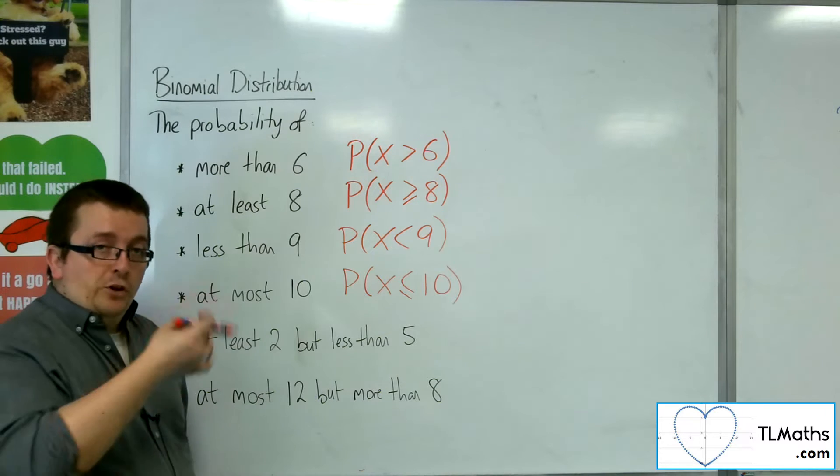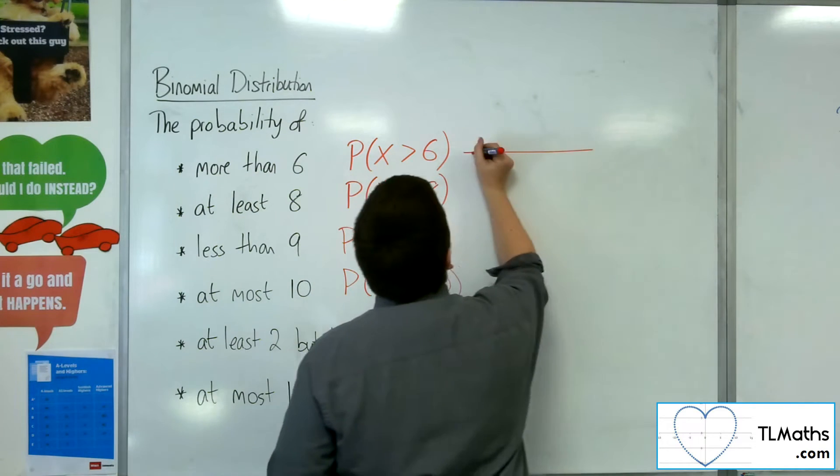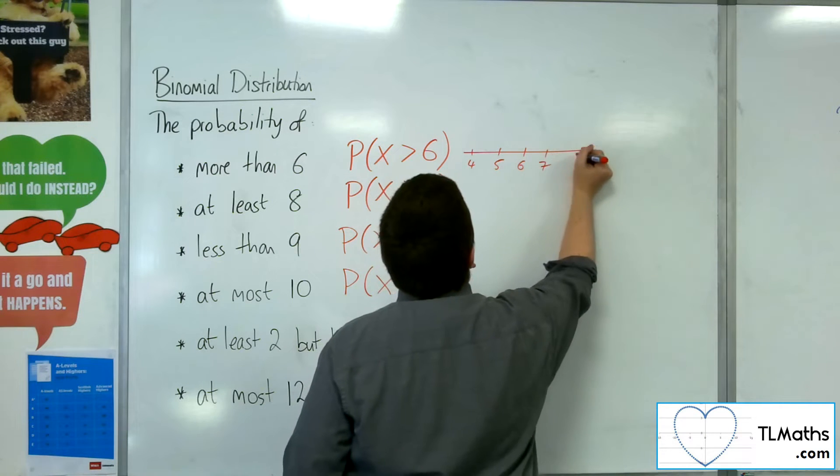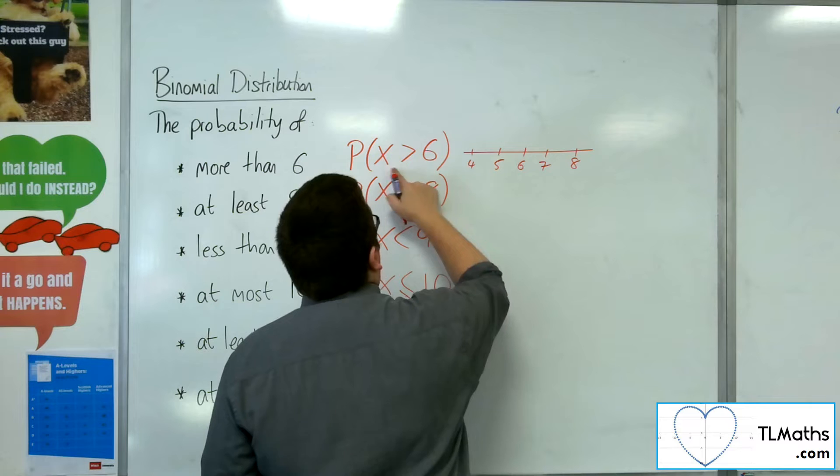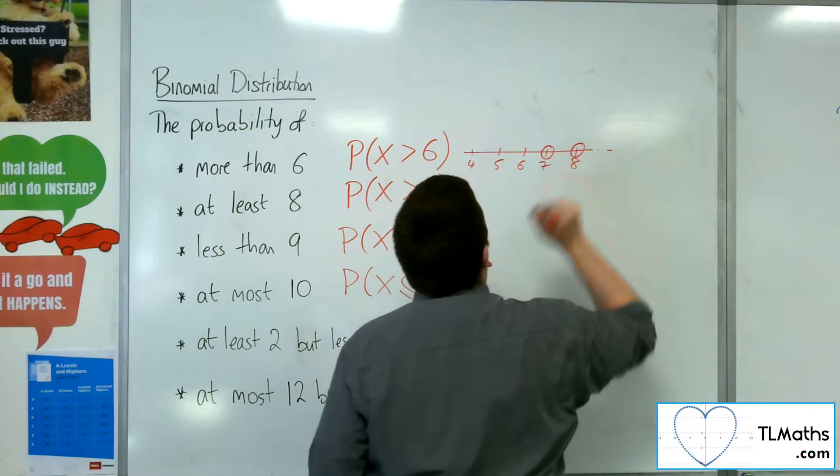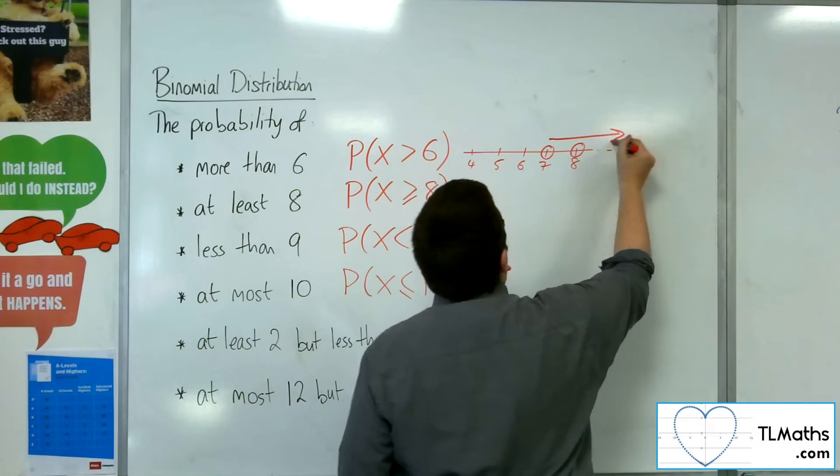So if you're thinking about what these look like on a number line, then let's say we've got 4, 5, 6, 7, 8. If I want greater than 6, then I'm wanting 7, 8, and onwards. So I want all of those.